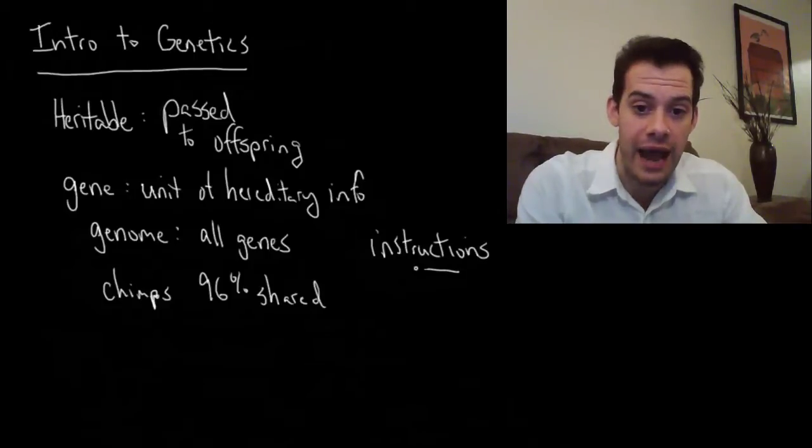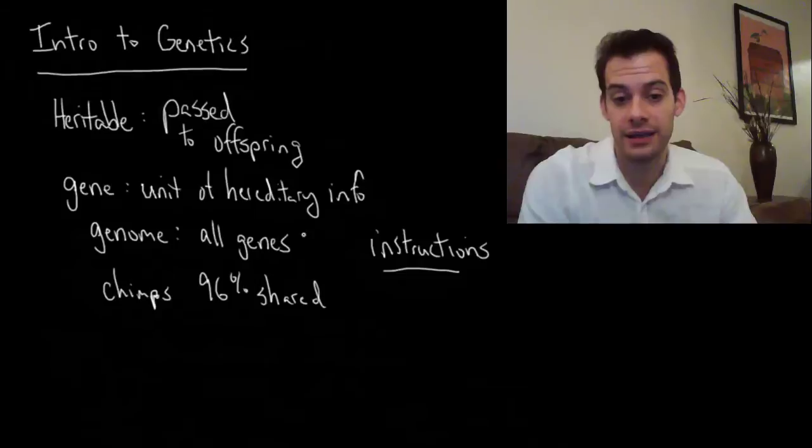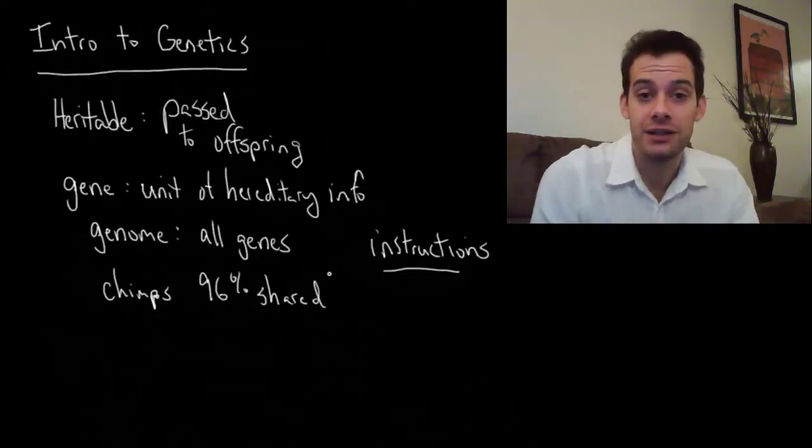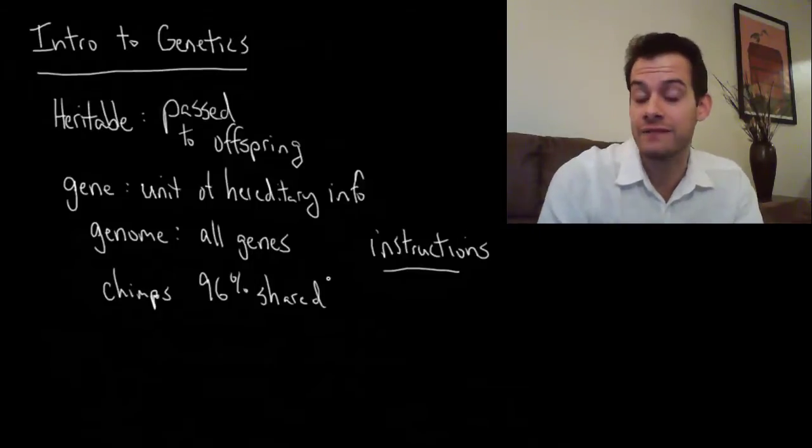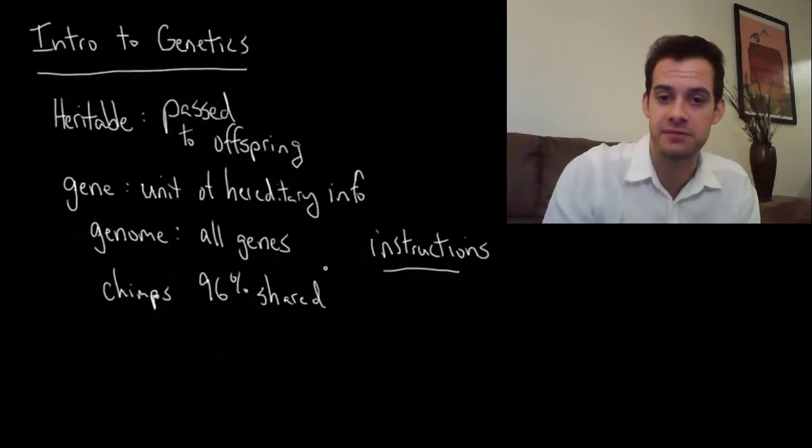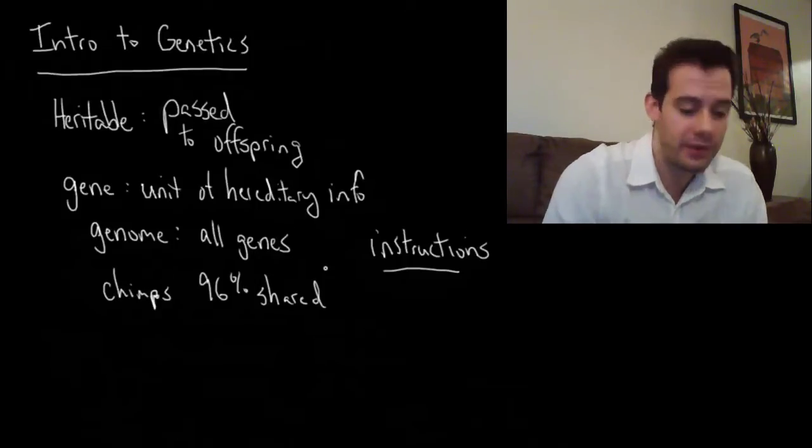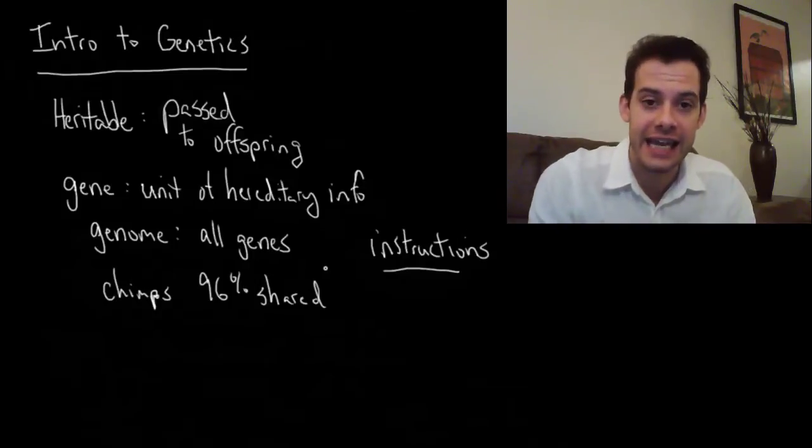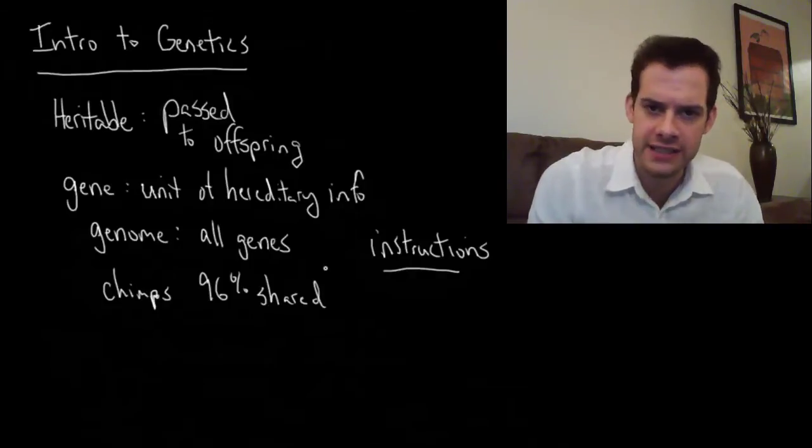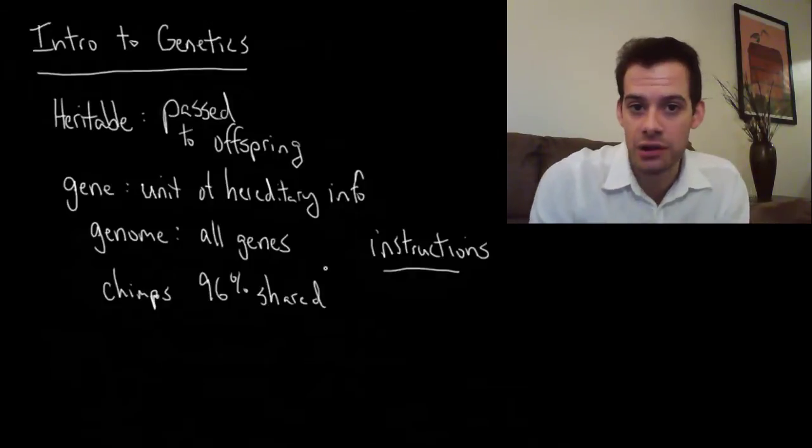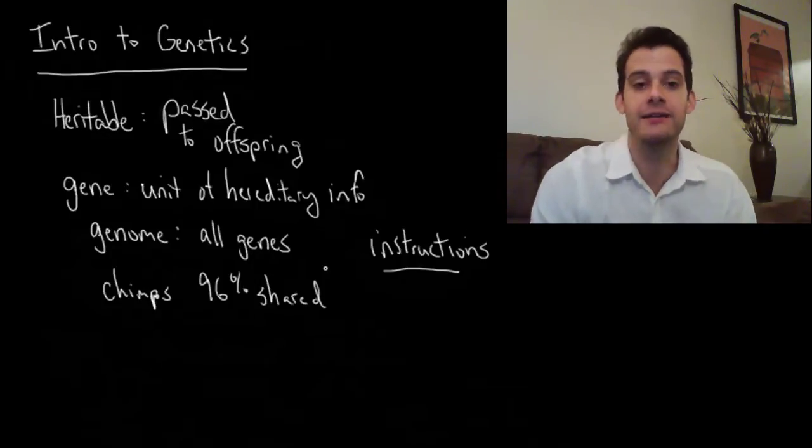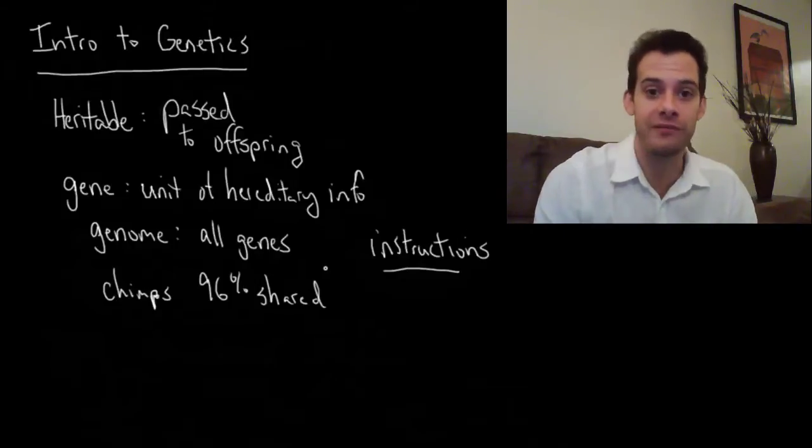A chimp's genes tell it how to build a chimp and a human's genes tell it how to build a human. If you think of genes as instructions you realize that chimps and humans need a lot of the same instructions. Because they have to build a lot of the same things. We need to build blood vessels and hearts and skin and hair and teeth and eyes and chimps need to build all these things too. So they're going to need a lot of the same instructions that we need. This is why our genomes are so similar. We're building most of the same types of things. They're not identical but they're very similar.